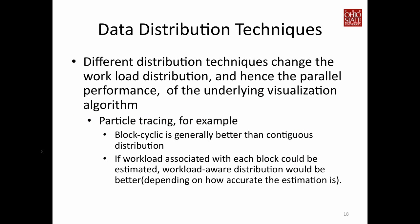Different distribution schemes change workload distribution and therefore affect parallel performance. For particle tracing, since you do not know where a particle will go, assigning a large contiguous region to a processor may leave that processor completely idle if no particles enter it. In that case, round-robin or block-cyclic distribution is preferable. It is always better to distribute data blocks based on associated workload, but accurate workload estimation is often very difficult, making workload-aware distribution impractical in some cases.